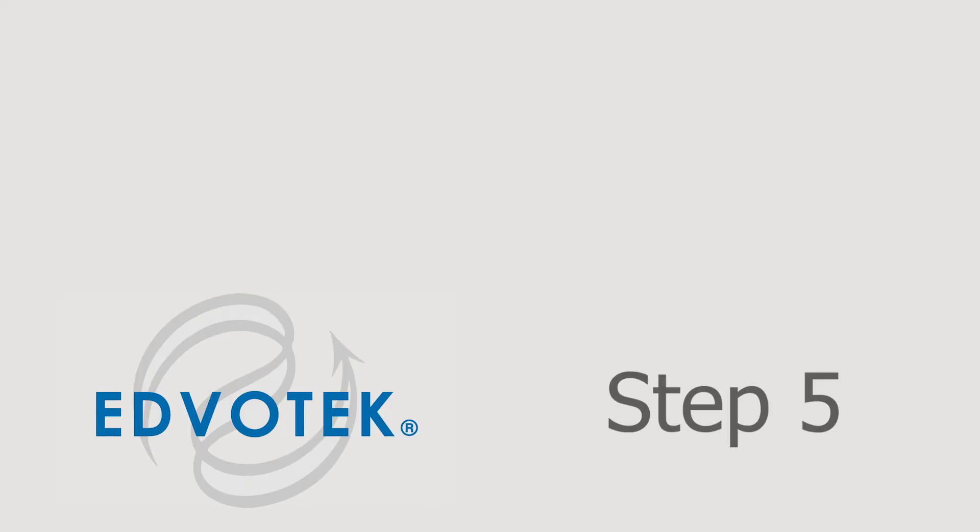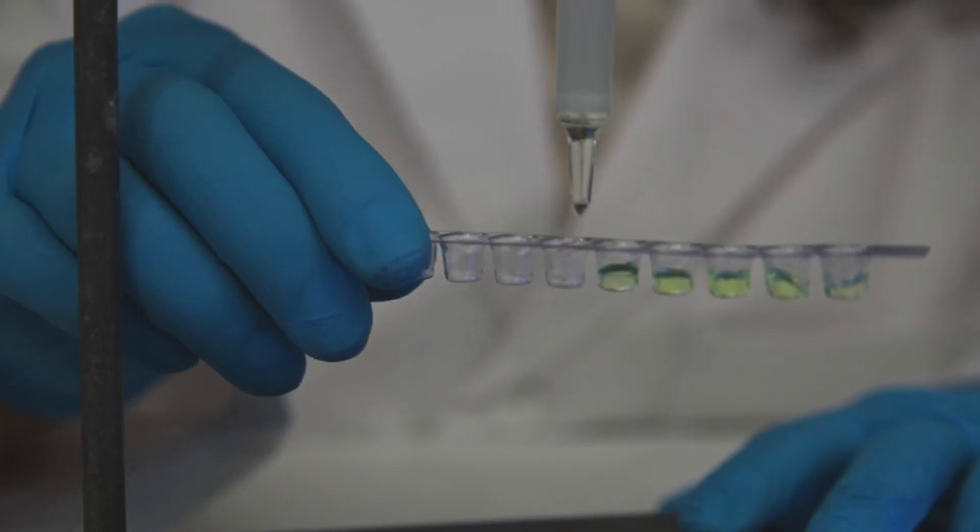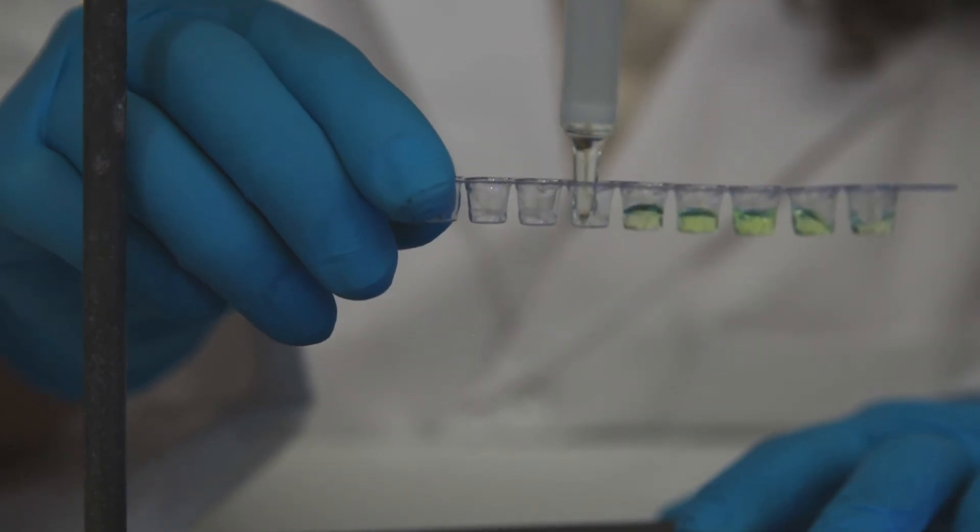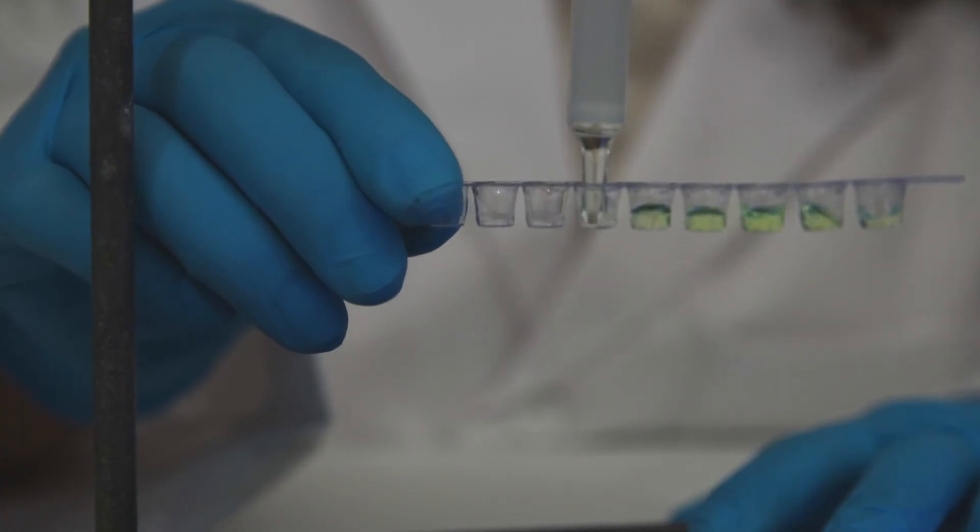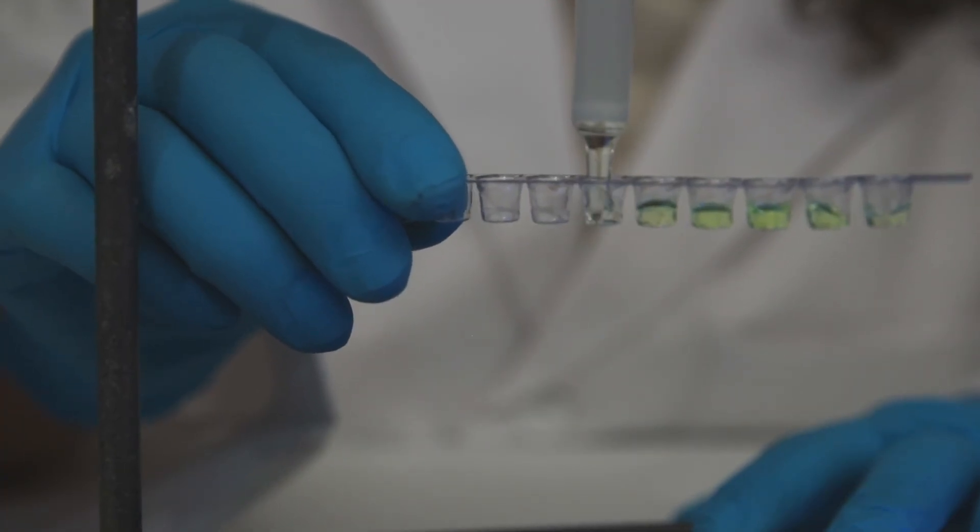Step 5: Continue to monitor the progress of the GFP in the column, and collect fractions until the GFP has been completely eluted. The column can then be capped and set aside.